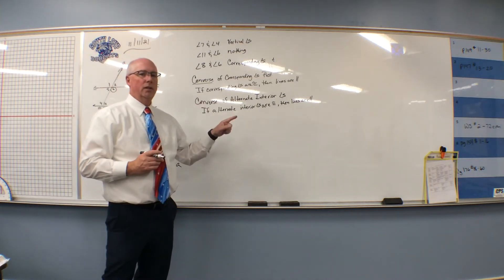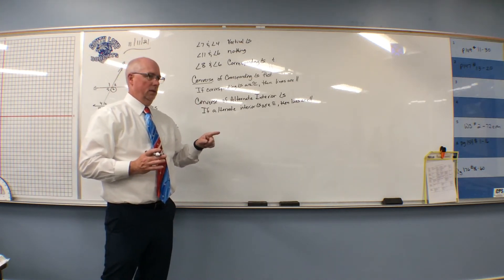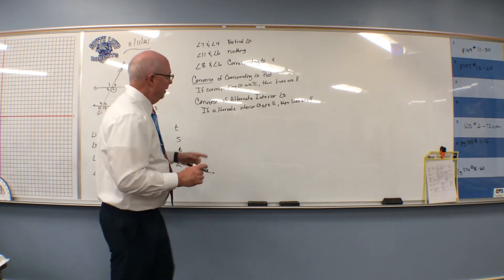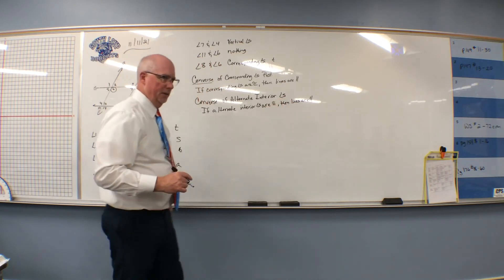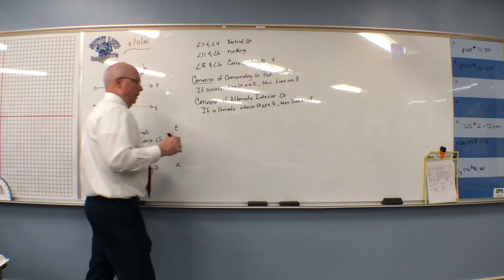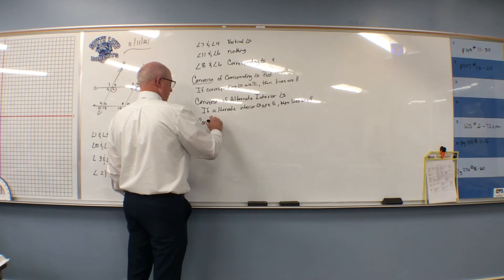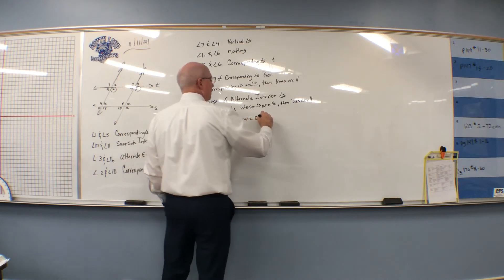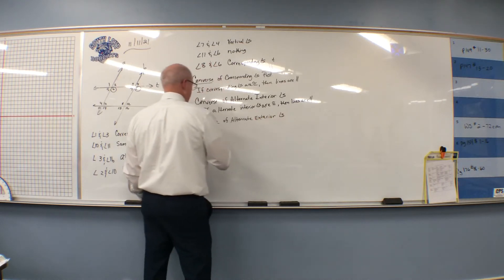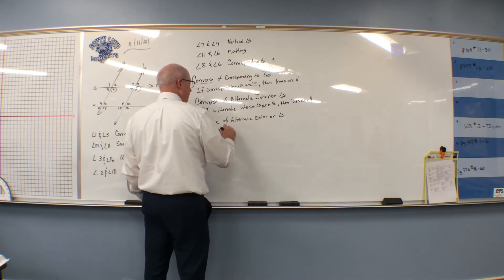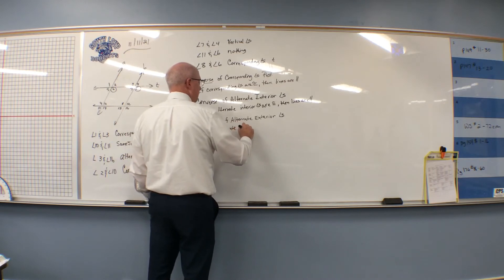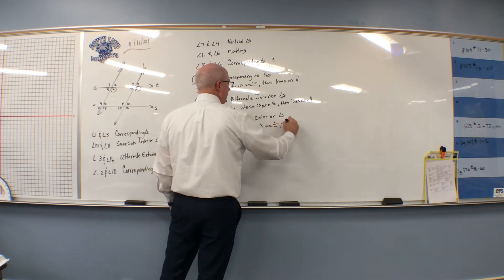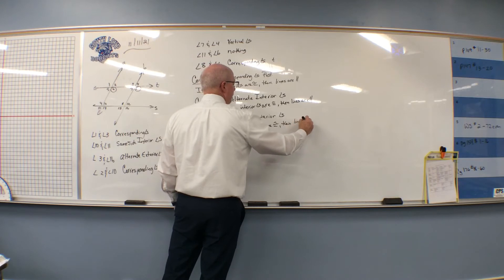If we have a converse of alternate interior angles, we also have a converse of alternate exterior angles. The converse of the alternate exterior angles says: if alternate exterior angles are congruent, then lines are parallel.